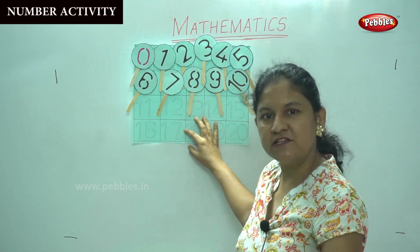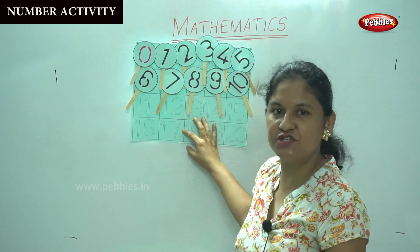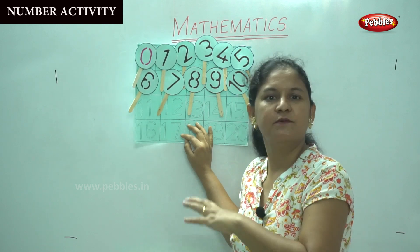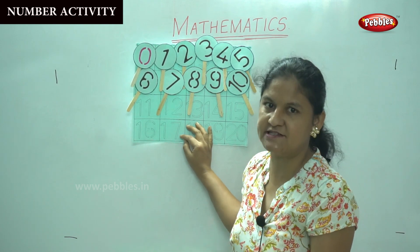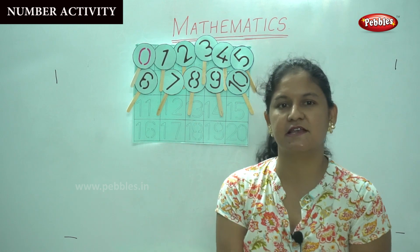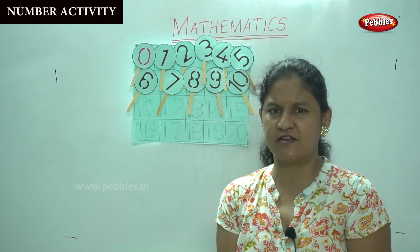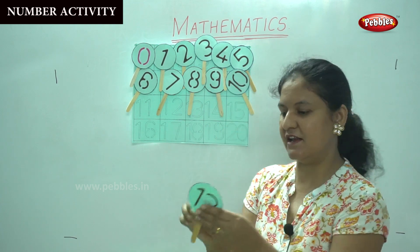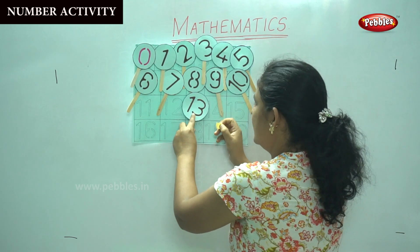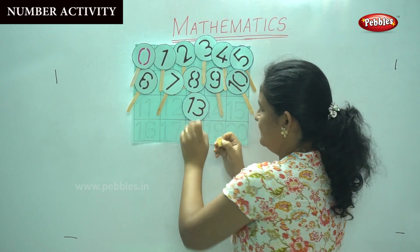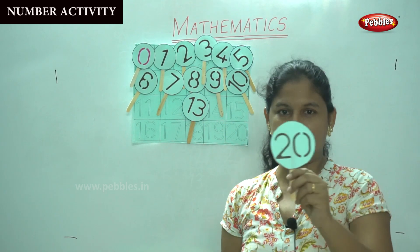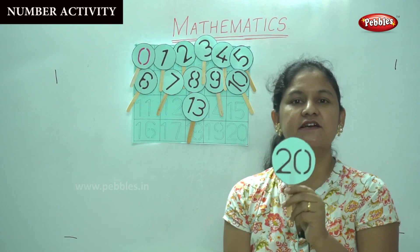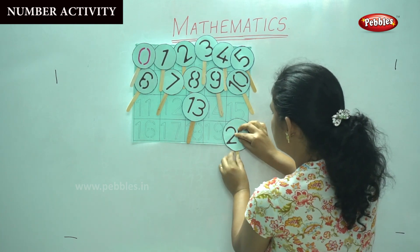Now we are going to do numbers 11 to 20. So randomly I'm just going to take any number and place it in its appropriate place. The first number is number 13. So I place number 13 in its place. The next number I have taken is number 20 — 2, 0 is 20. I place number 20.